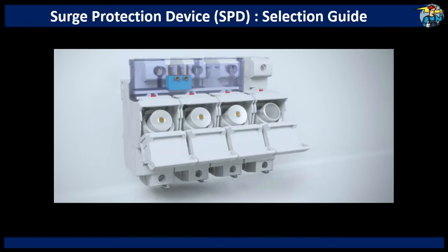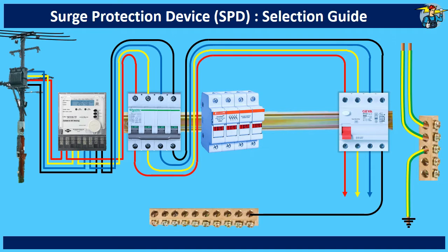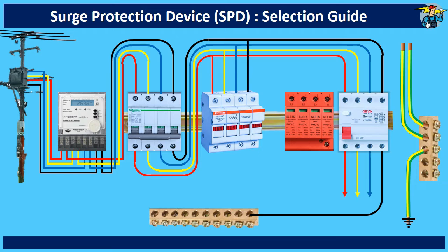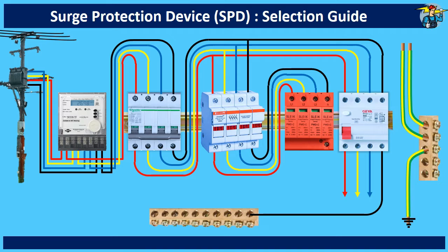According to product testing standards for SPDs, manufacturers are required to declare the SCCR — that is the short circuit current rating of their SPD. Check the specifications on the instruction sheet to find out this value. Then install a type 1 SPD at the entrance of the building, since the power supply is through aerial cables. Connect the main breaker output terminals to the input terminals of the fuse holder. Output terminals of the fuse holder are required to be connected to the four input terminals of the SPD. Then, the protective earth marked as PE needs to be connected to the earth bar. If copper wire is used, the minimum cross-sectional area of this cable for a type 1 SPD should be 16 square millimeters.